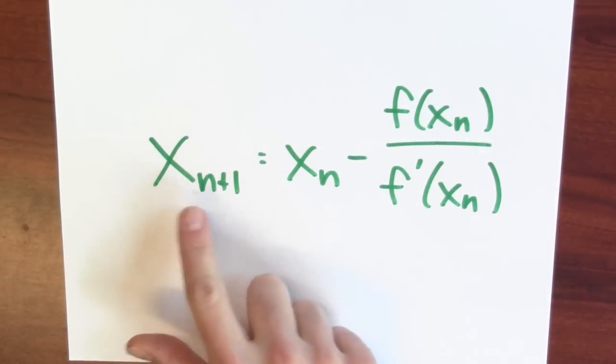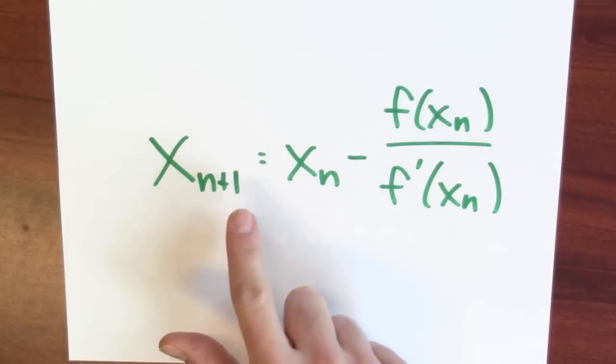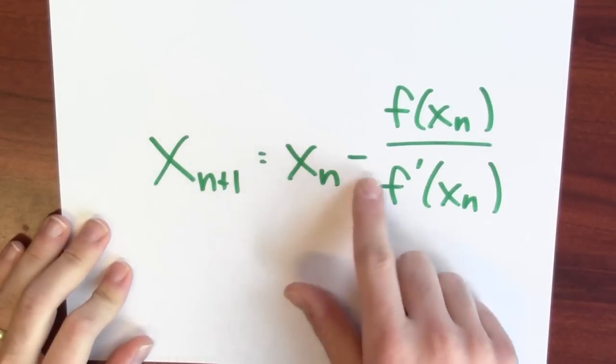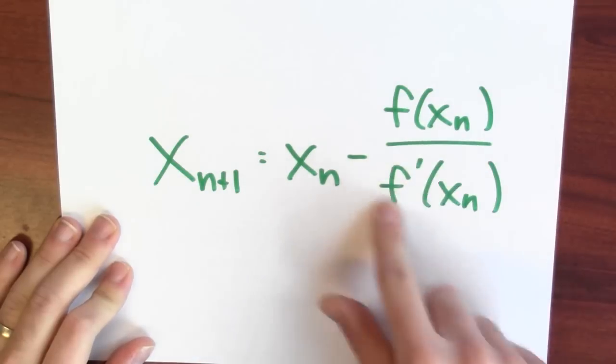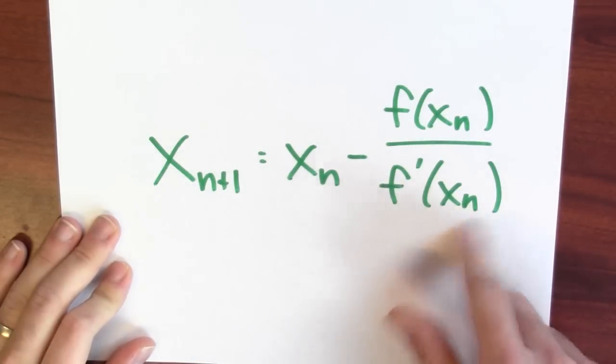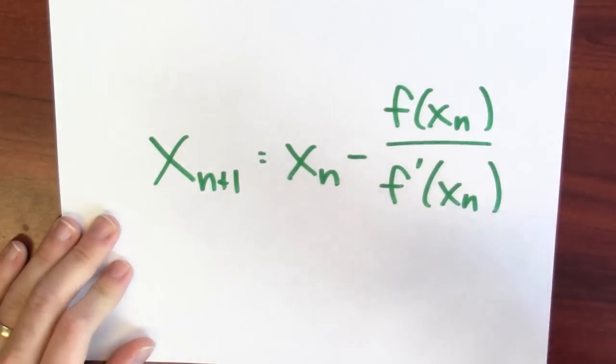In summary, the new guess x sub (n+1) equals the old guess x sub n minus f(x_n) divided by f'(x_n), and I just keep repeating this over and over again. When Newton's method actually succeeds, it works really well and zooms in on that root really quickly. The problem is that I can't promise you that Newton's method will actually work.